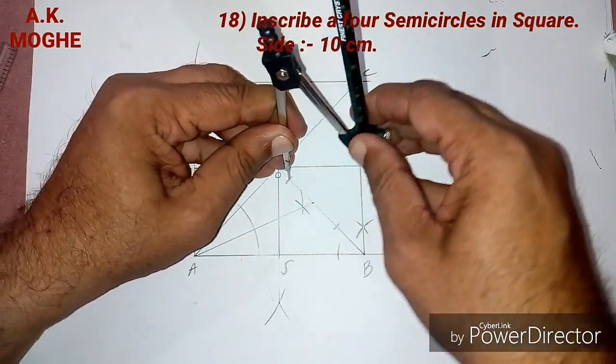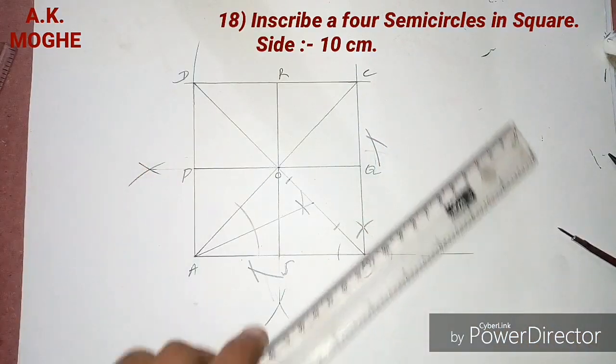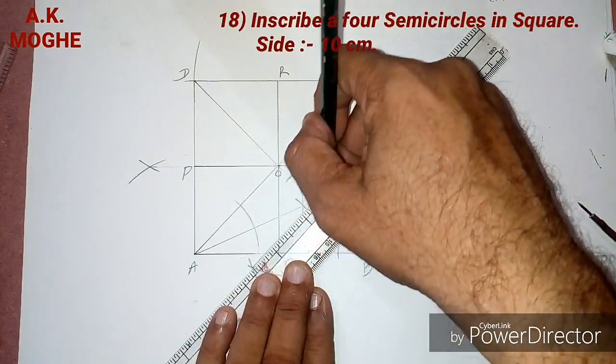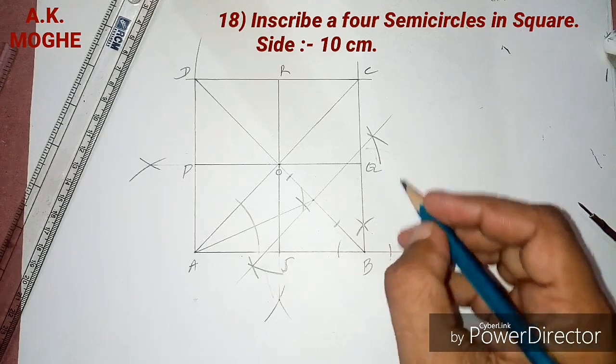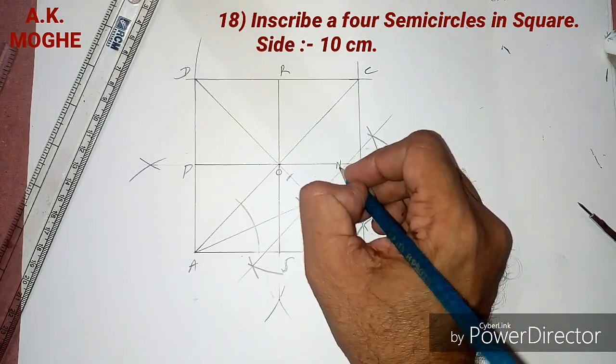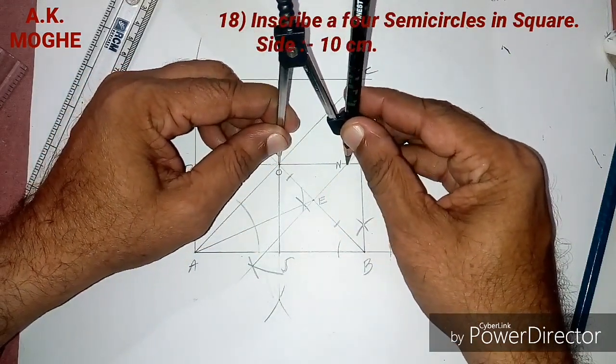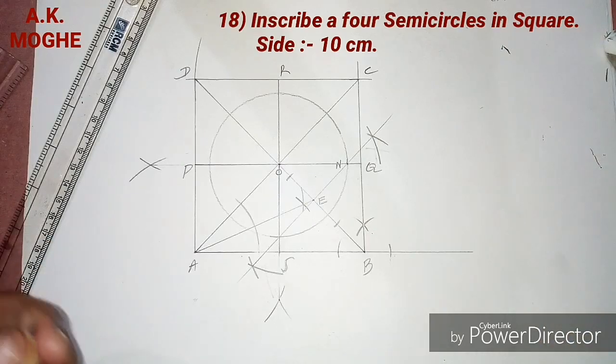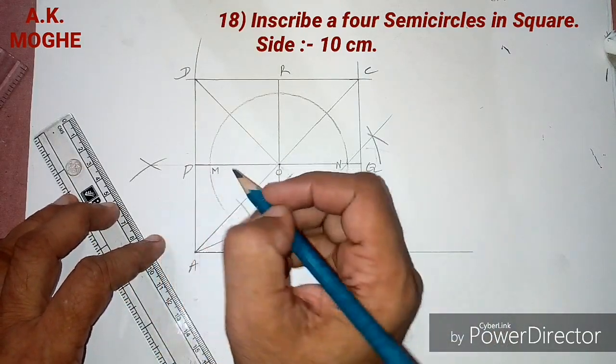From that point we will draw a perpendicular bisector on that side through the intersection point. So we will get one side of the square. Now we have to draw a circle with radius equal to O edge, and join each point where the perpendicular bisector meets the circle.